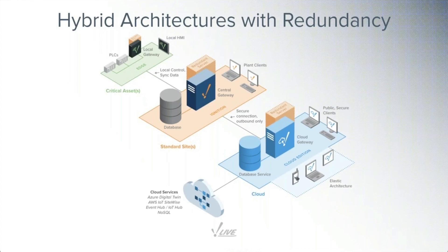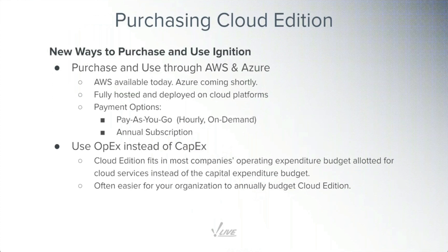You can purchase and use Cloud Edition through both AWS and Azure. AWS is available today; Azure is coming shortly. It's fully hosted and deployed on these cloud platforms and deploys into your own environment — you log into your AWS or Azure account and deploy it inside there. It's a pay-as-you-go model or an annual subscription. The pay-as-you-go is hourly and on demand. If you spin it up and spin it back down, you only pay for the time you actually use it.